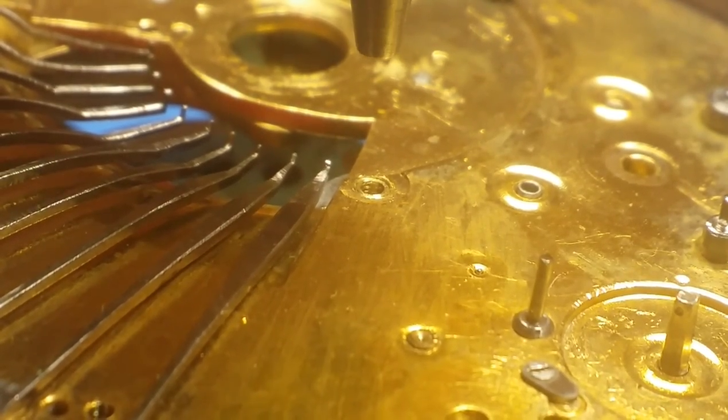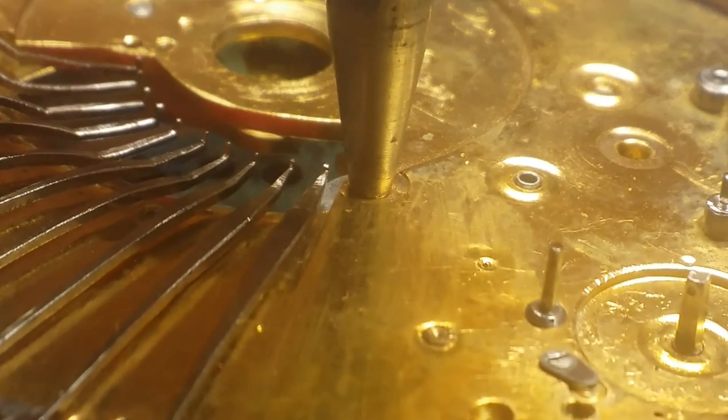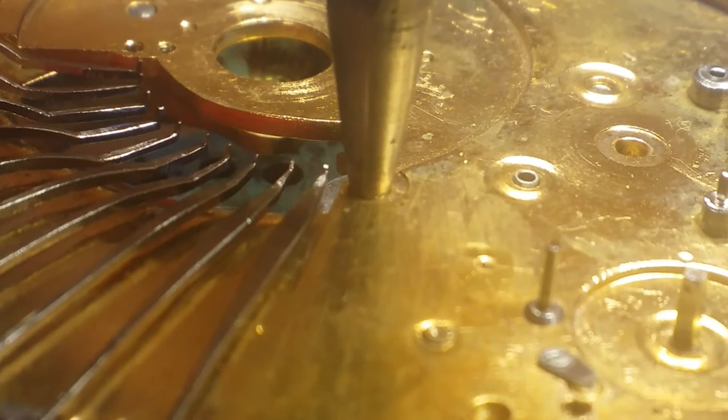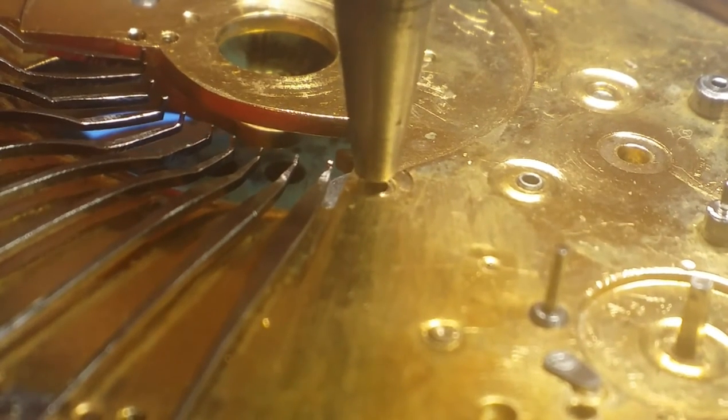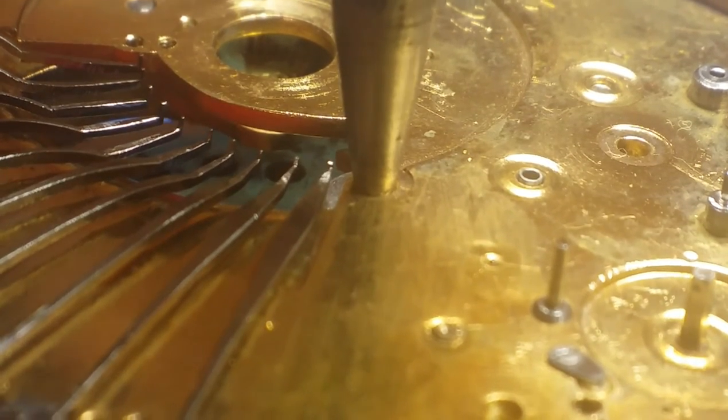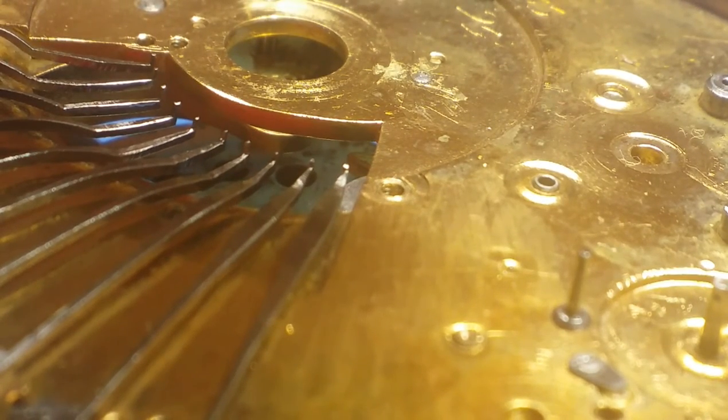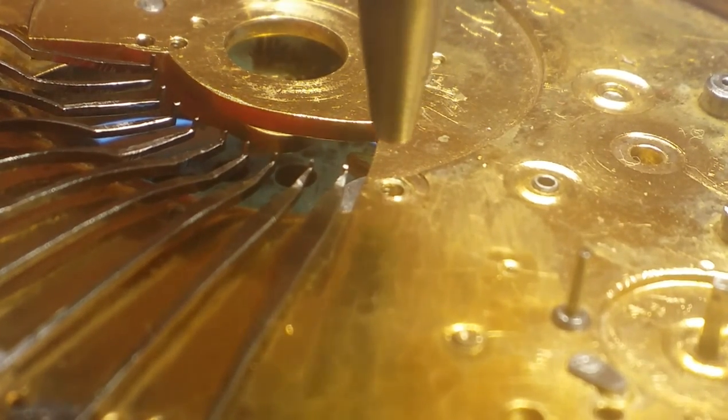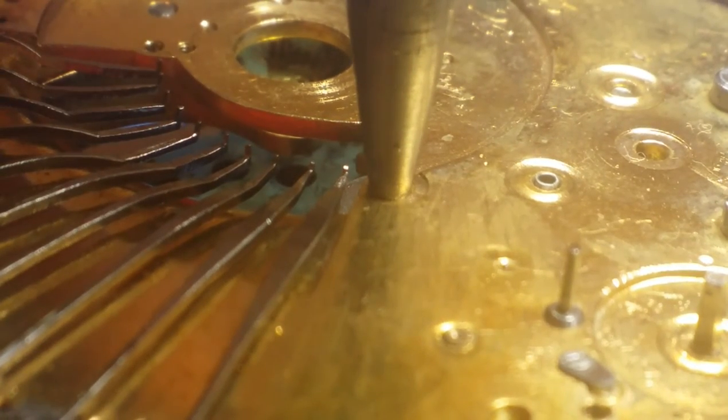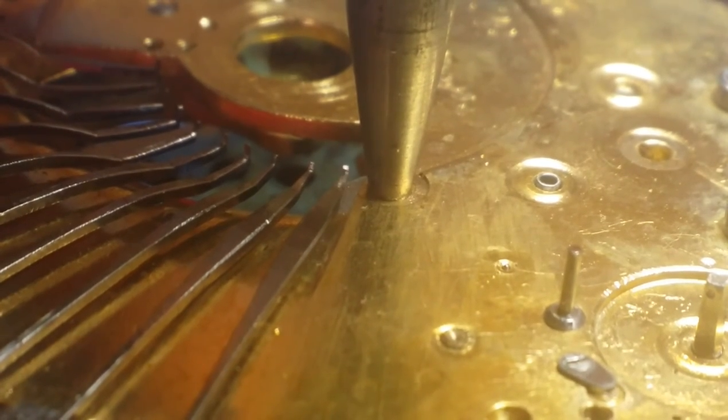Something else I do, usually in conjunction with reforming the threads on the screw is, using the concave punch in the staking set, I try to push the brass metal surrounding the threaded hole in the plate, push it towards the center and towards the hole, thus shrinking the size of the hole. There, again, we only need maybe two or three hundredths of a millimeter movement.